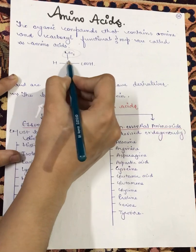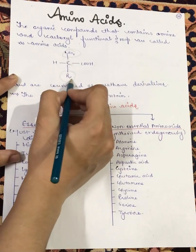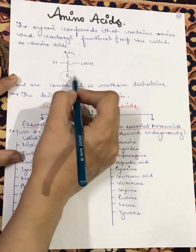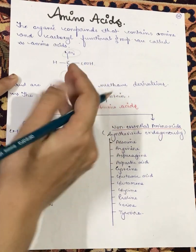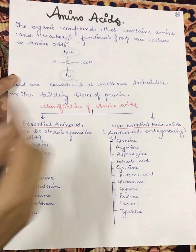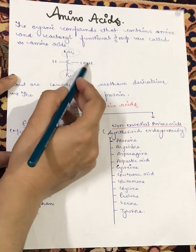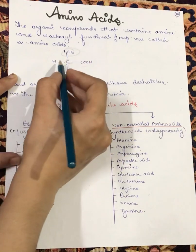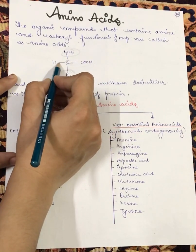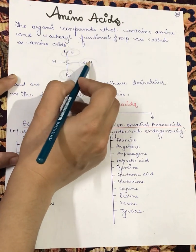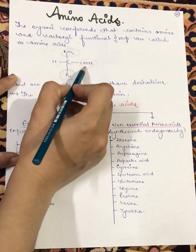The amine group is present in the carbon compound. There will be an alkyl group that can be added, and this R group will change for different types of amino acids. If you see the structure, the R group will change every place, but the basic structure will remain the same — which includes a carbon, hydrogen, amine group, and carboxylic acid group.